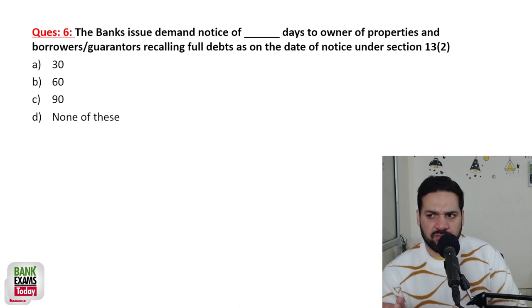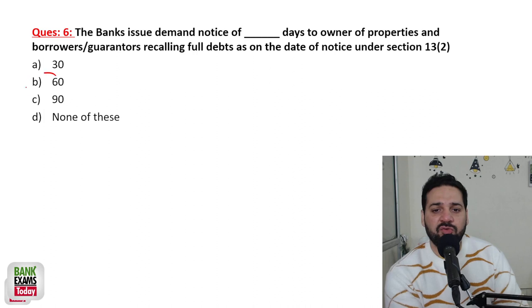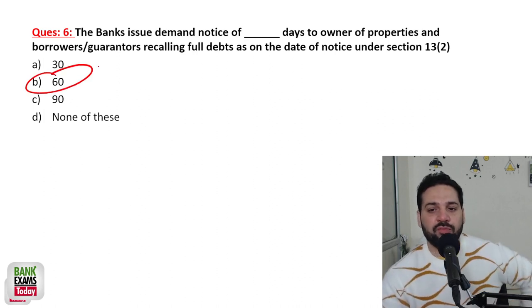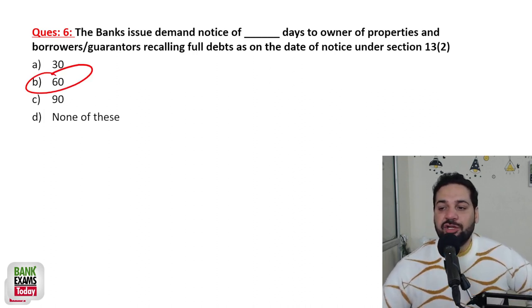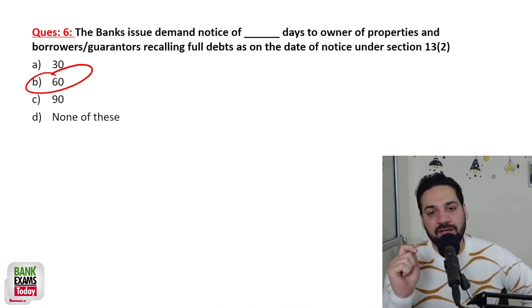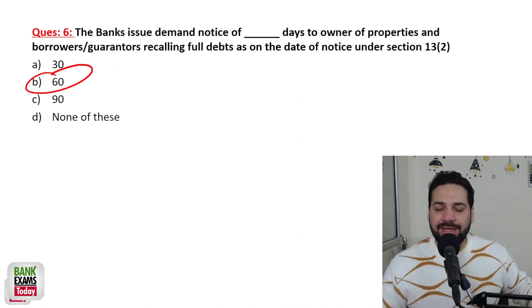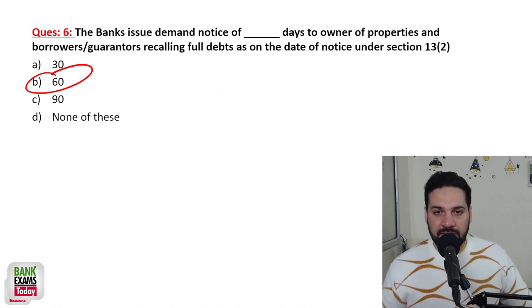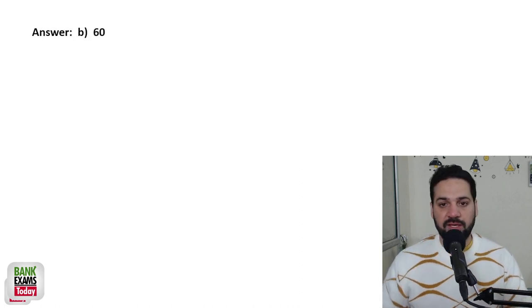The bank has to issue a demand notice of 60 days to the owners of property and the borrowers, recalling full debts as on the date of notice under Section 13, subsection 2. The bank will give the borrower a 60-day notice stating that since the loan EMI has not been paid, the bank will seize the property — please pay your dues.